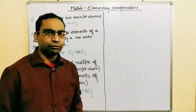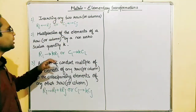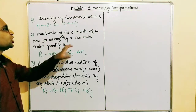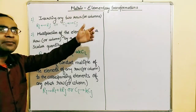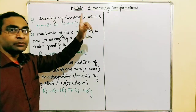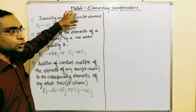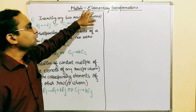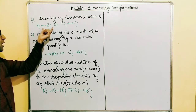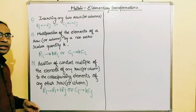We can perform elementary transformations on a matrix either on a row or on a column. The first elementary transformation is interchanging any two rows or columns. We can interchange two rows and the obtained matrix will be called an equivalent matrix, or we can do the same with columns. We cannot interchange a row with a column. Symbolically this is represented as R_i and R_j for rows, or C_i and C_j for columns.